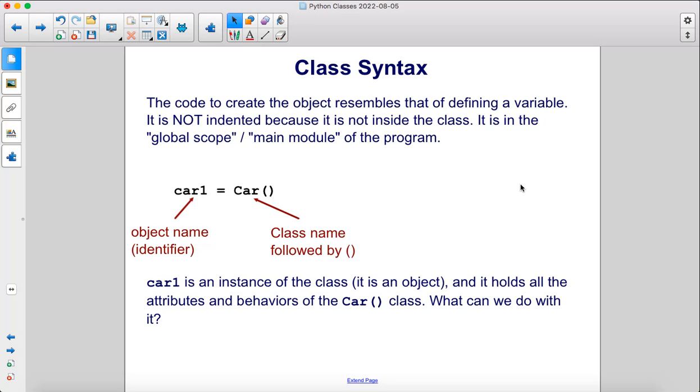The code to create the object resembles that of defining a variable. It is not indented because it is not inside the class. It is in the global scope or main module of the program. So here we have the object name or identifier, car1,